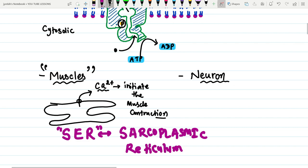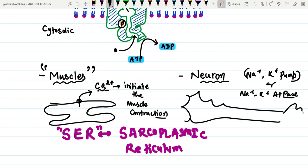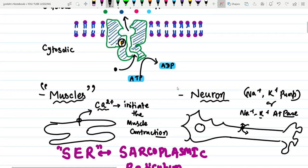The Na+/K+ ATPase plays an important role in nerve conduction. In the process of nerve conduction, there is movement of sodium and potassium ions across the neurolemma — the plasma membrane of the neuron — which is performed by the Na+/K+ ATPase. This demonstrates the importance of P-type pumps in both muscle and neuronal cells.